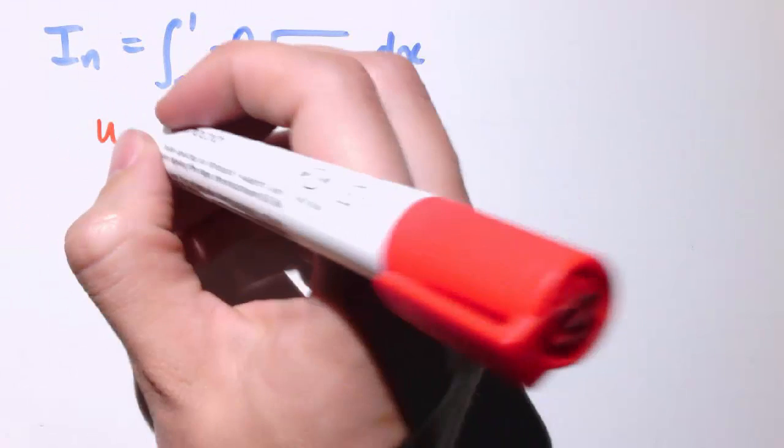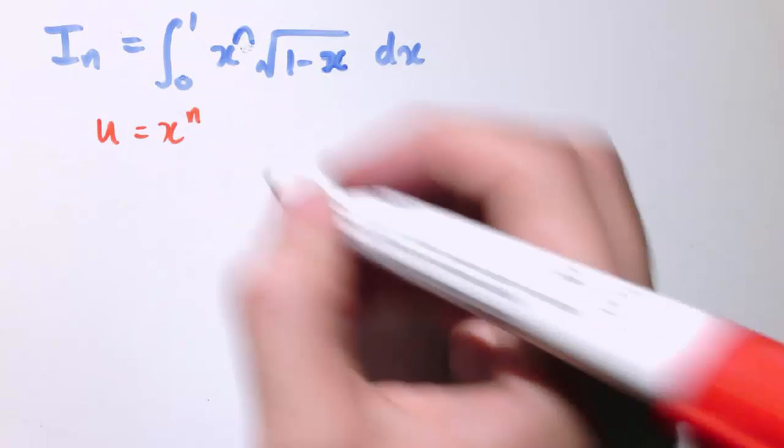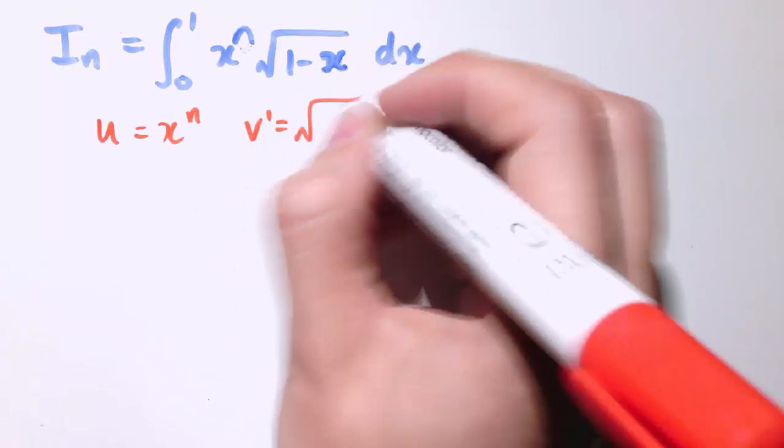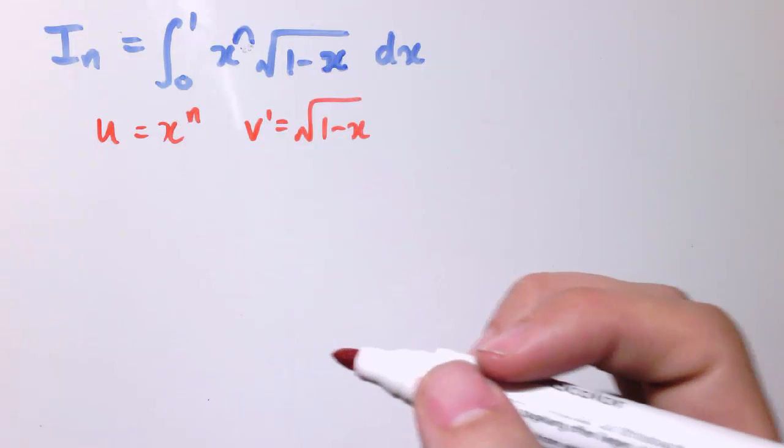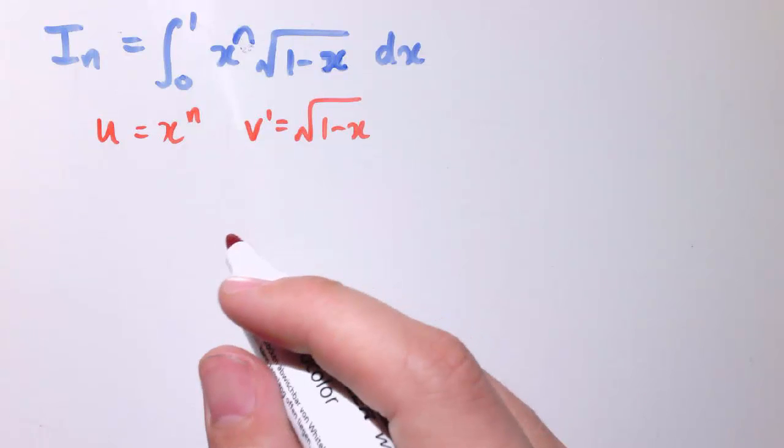We'll end up with a reduction formula. So let's take u equals x to the n, and we'll take v prime to be the square root of 1 minus x. Now, you might think it would be easier to do this the other way.